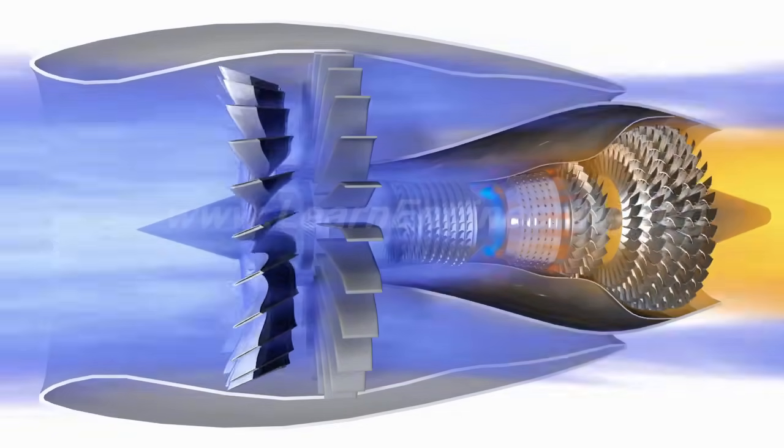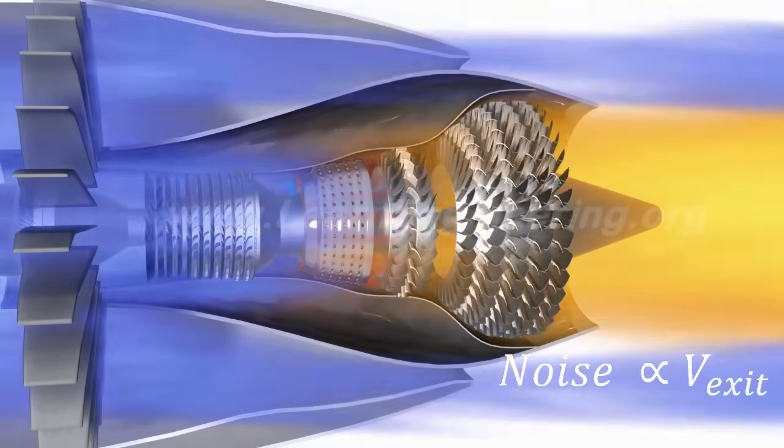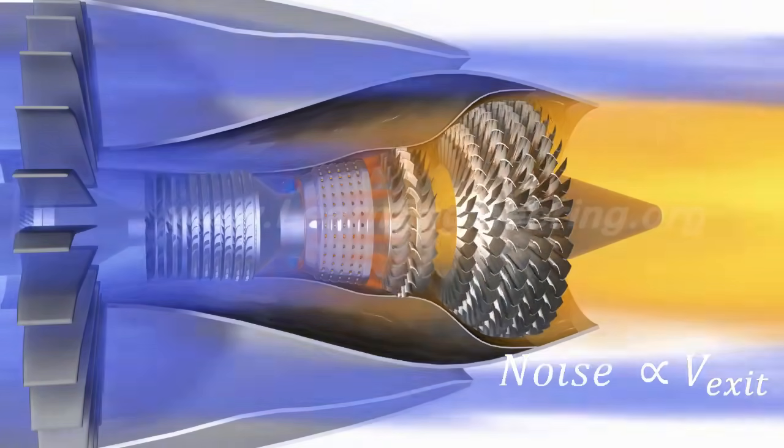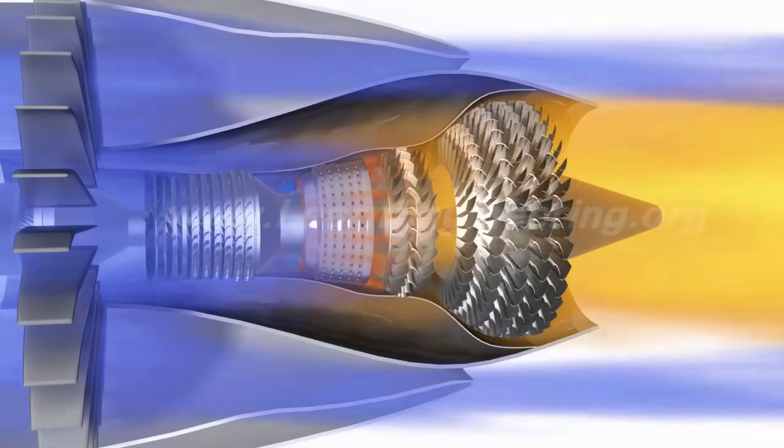The noise produced by a jet engine is highly dependent on the exit jet velocity. Since in a turbofan, the bypassed cold air gets mixed with the hot air, it is possible to keep the outlet velocity within a limit. Thus, it overcomes the noise problem.